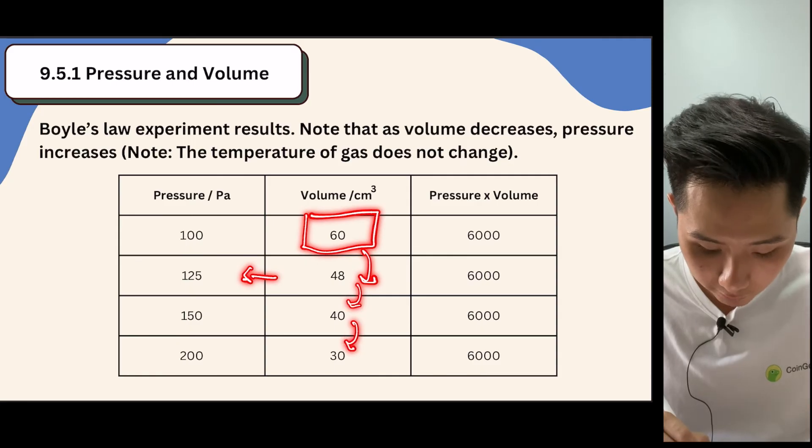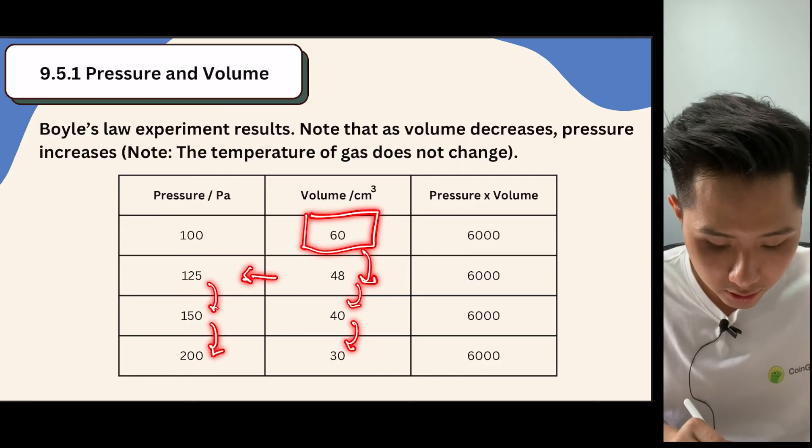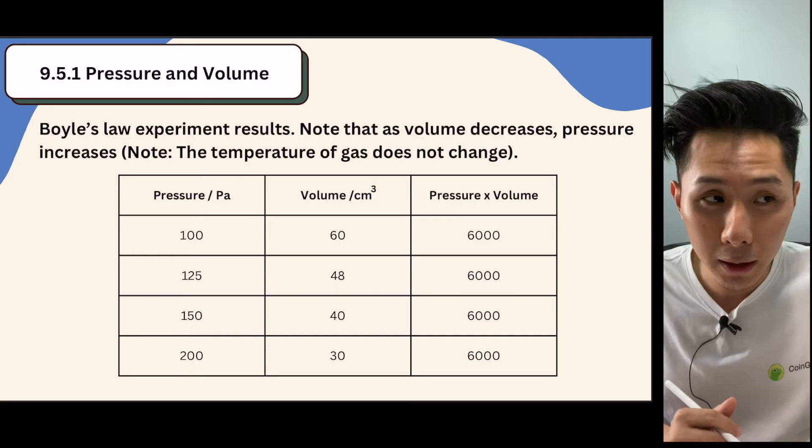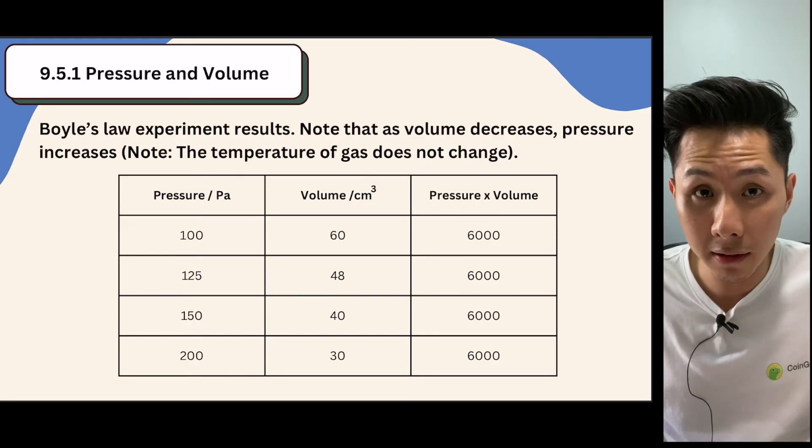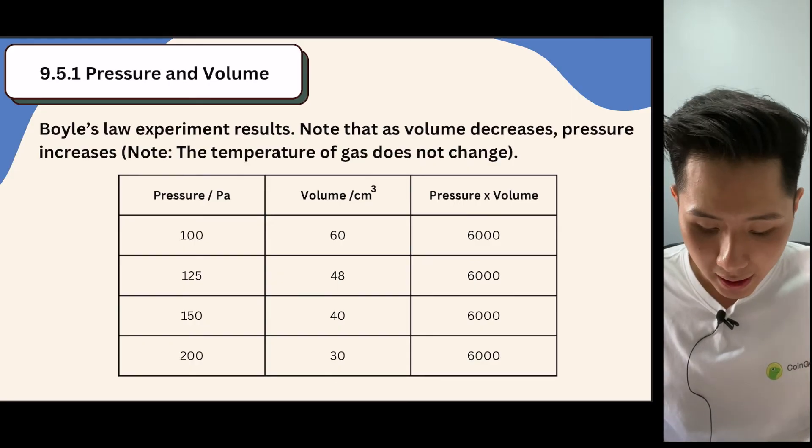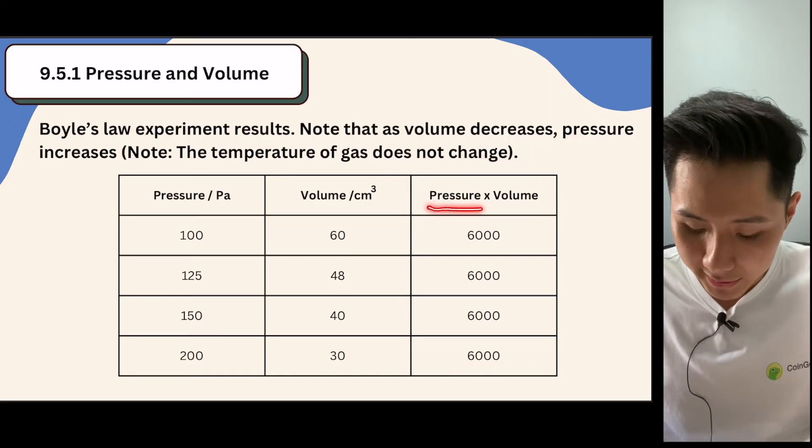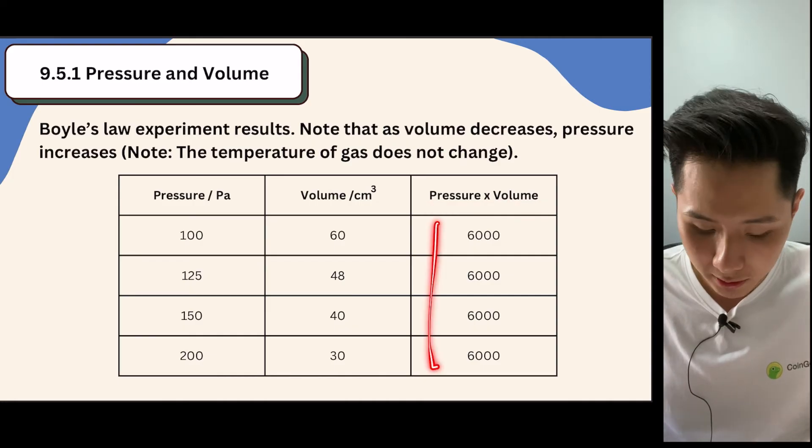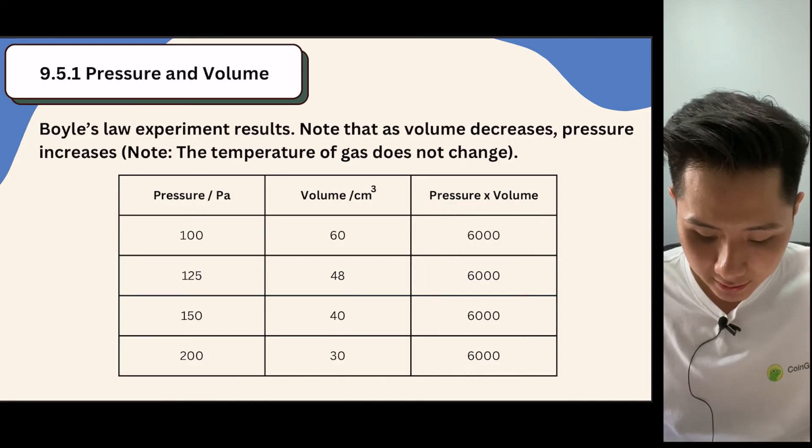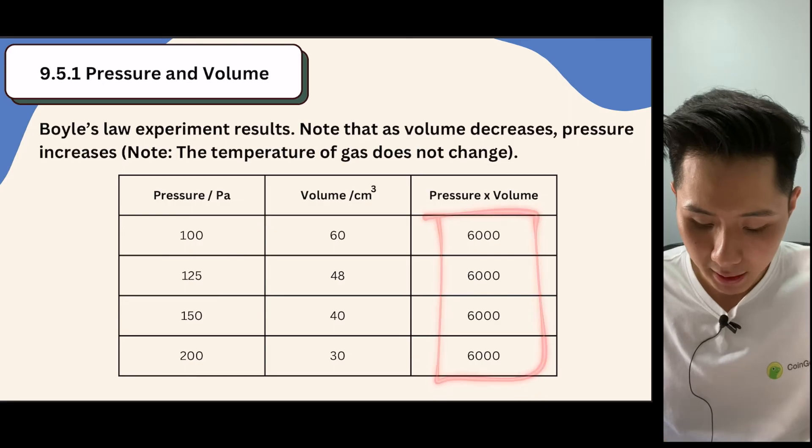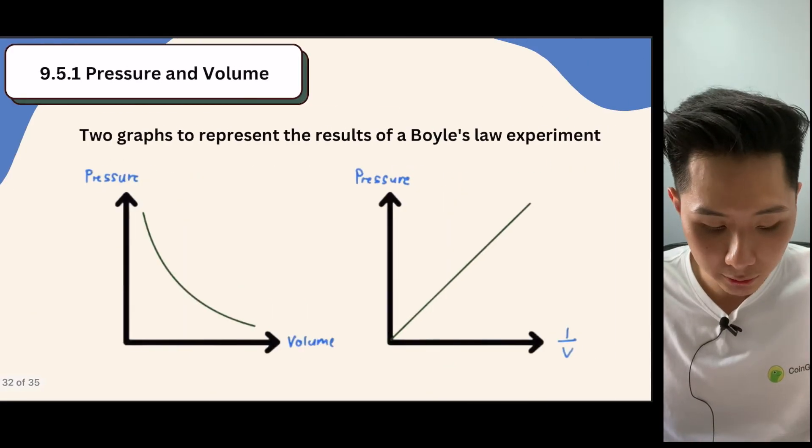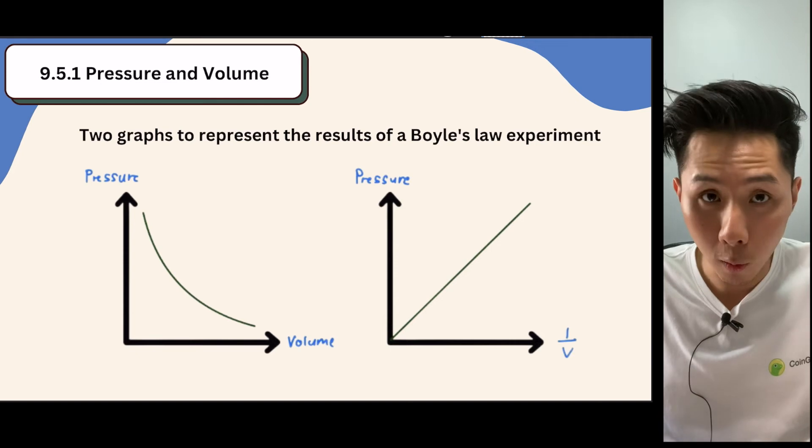So if you continue to decrease the volume, the pressure will increase. So in other words, we say that they have an inverse relationship. And what Boyle found out is that when you multiply pressure times volume in an ideal environment, you should often get the same values. And this leads Boyle to develop this law.